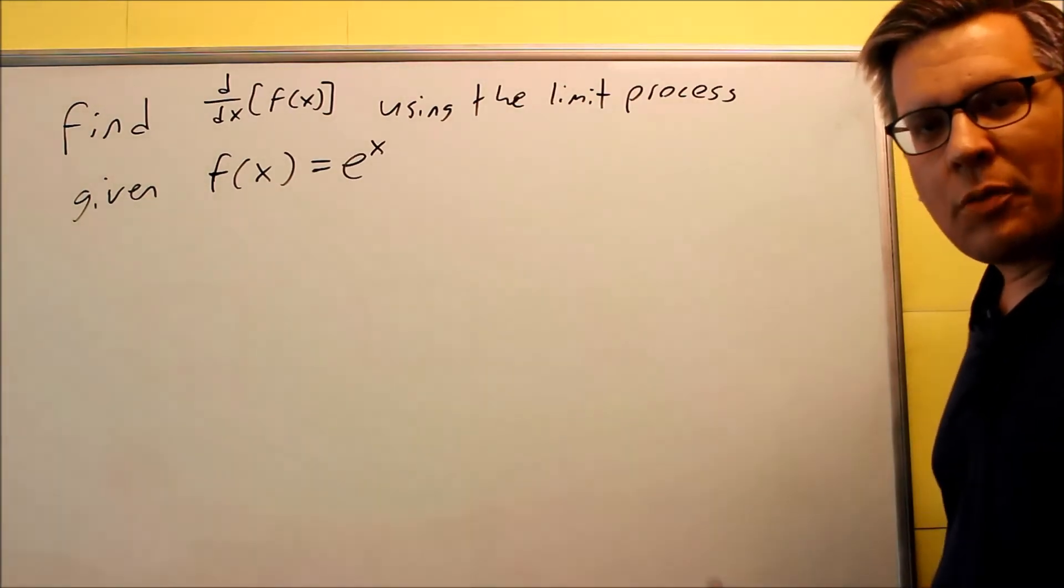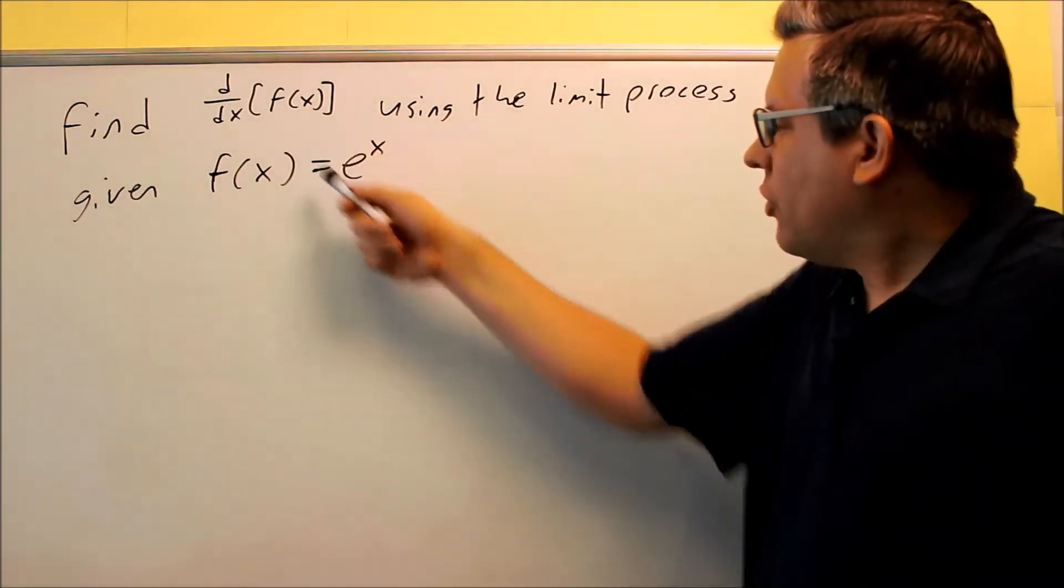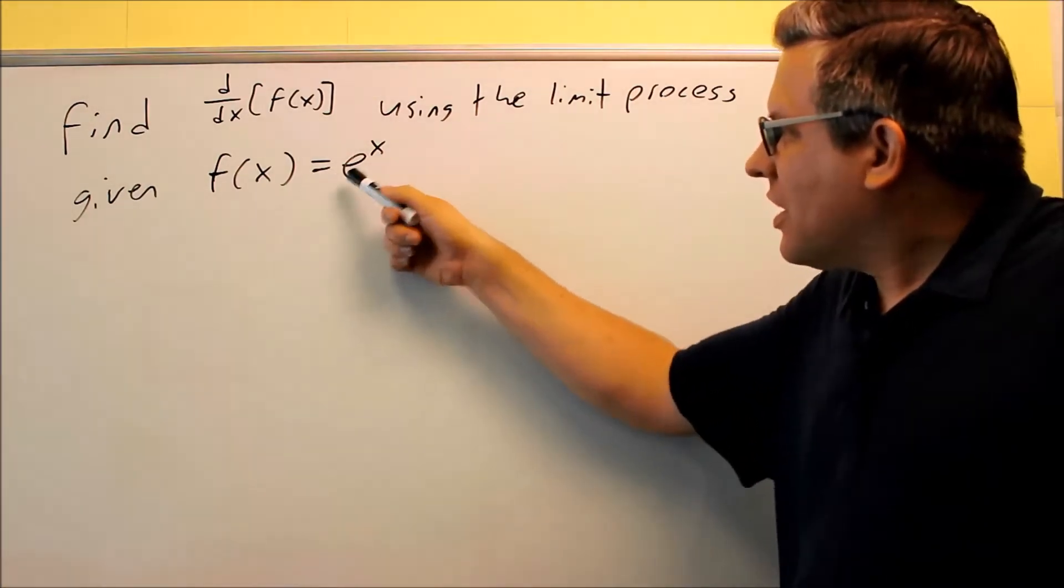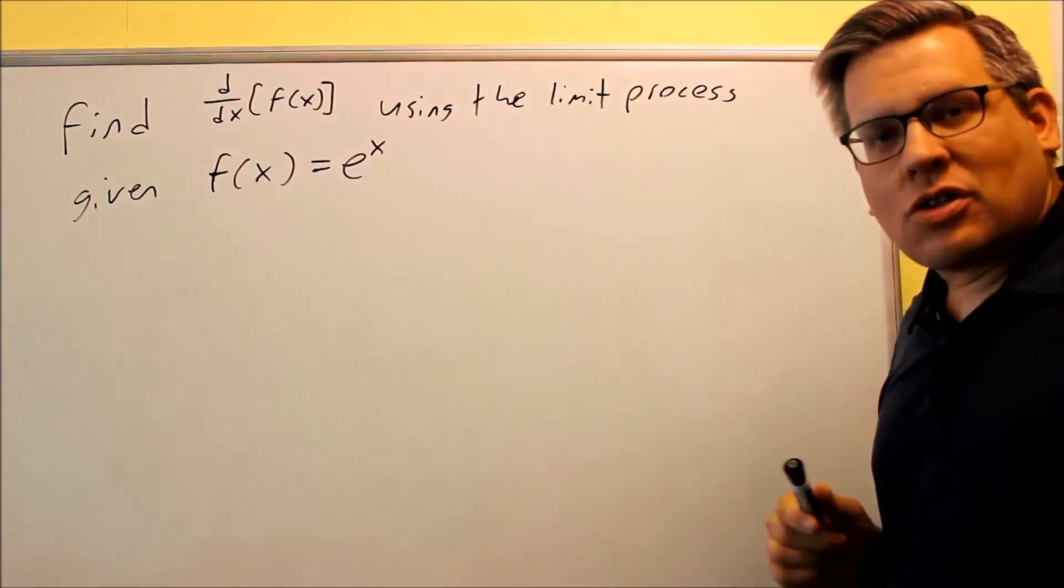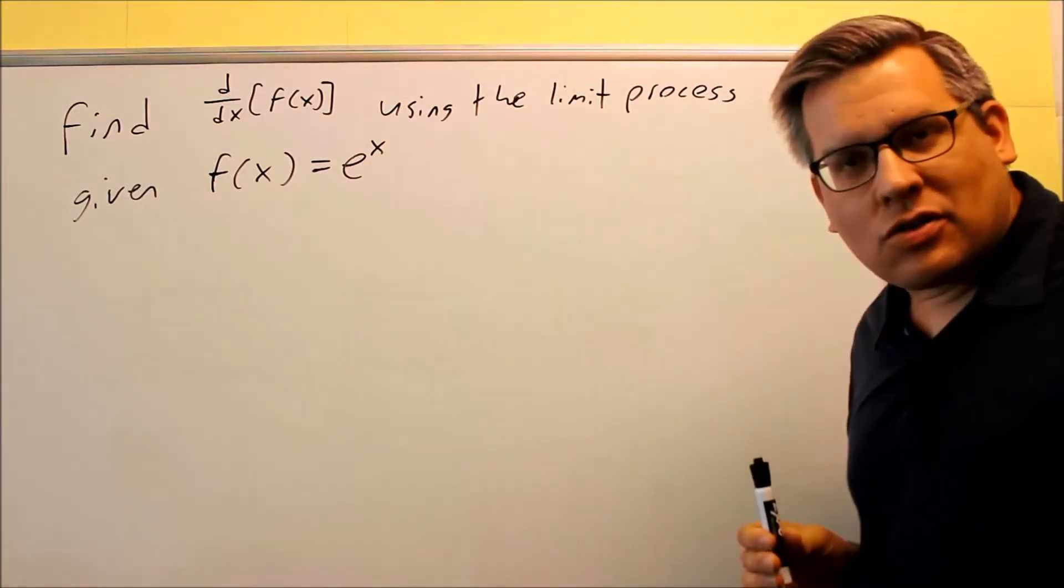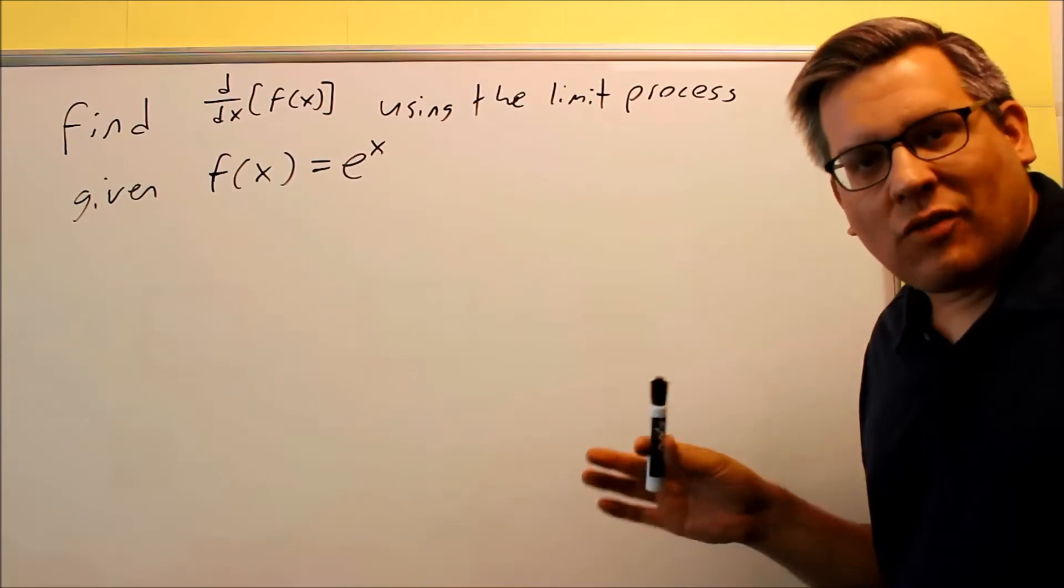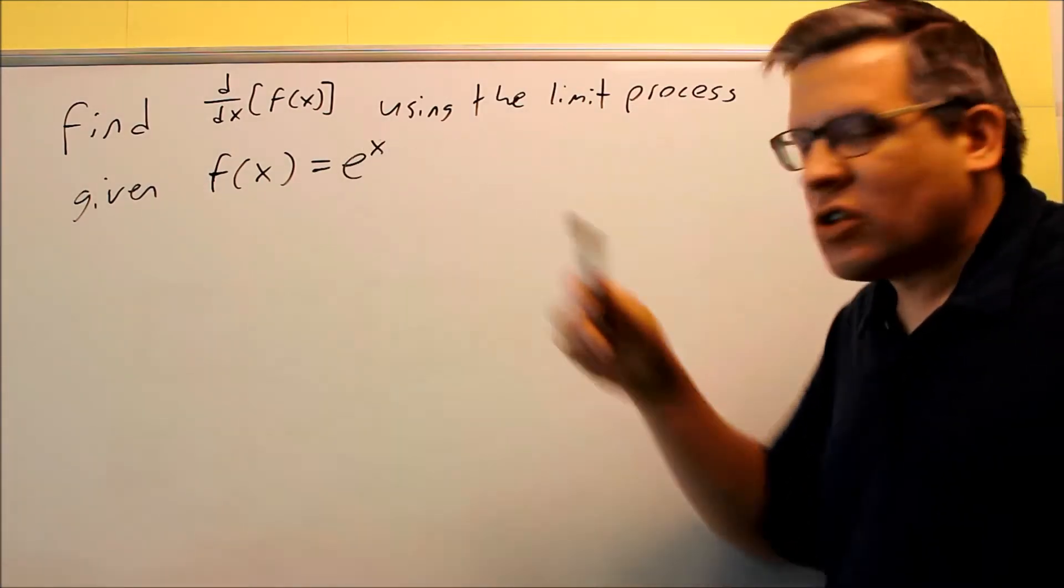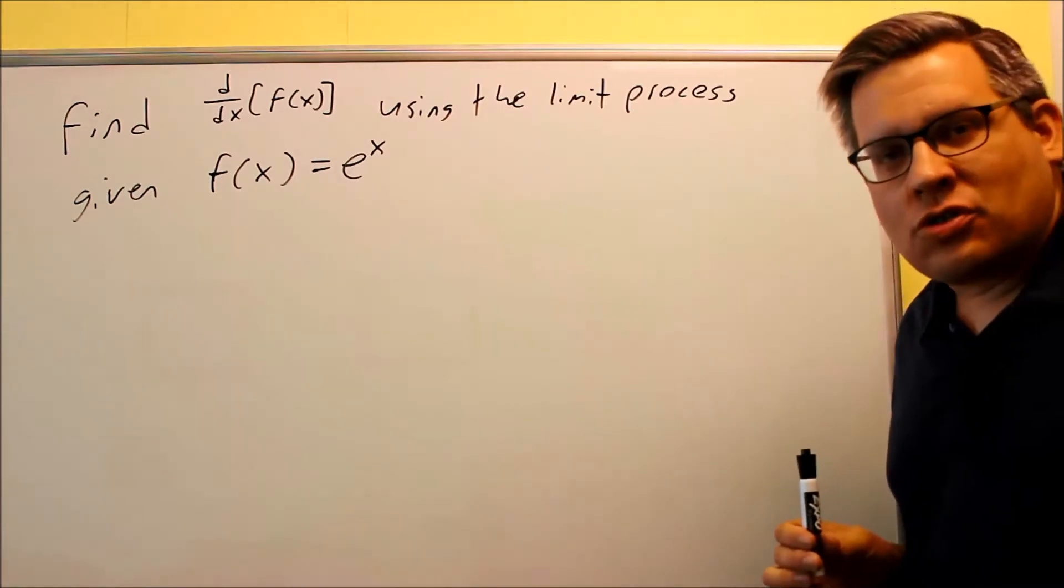What we want to do next is come up with a derivative of this exponential function. Particularly we're going to look at e to the x. So e to the x is something you probably would have gone over in pre-calculus. e is a constant, it's equal to about 2.7, we're raising that to an x. So this is an exponential function because there's an x in the exponent position.